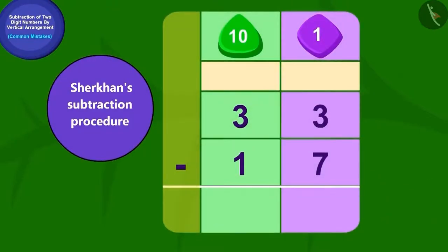Now let us look at Sher Khan's answer. Can we subtract seven ones of 17 from three ones of 33? No. So what do we do now? Yes. We will have to borrow one tenth from three tenths of 33.